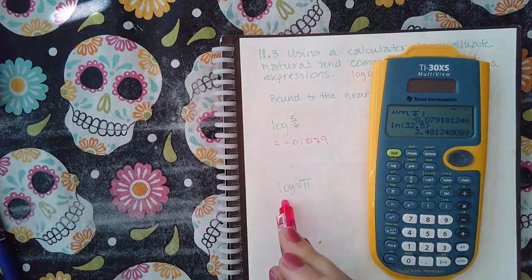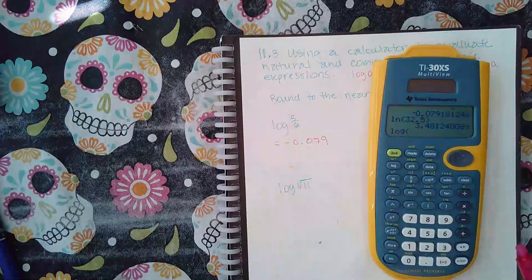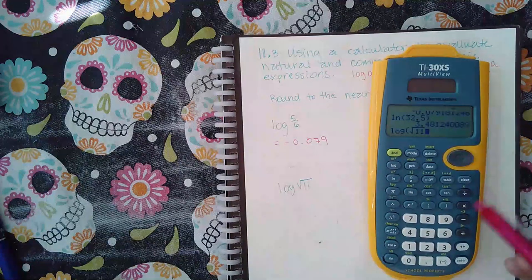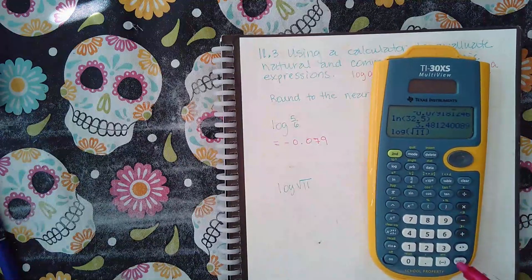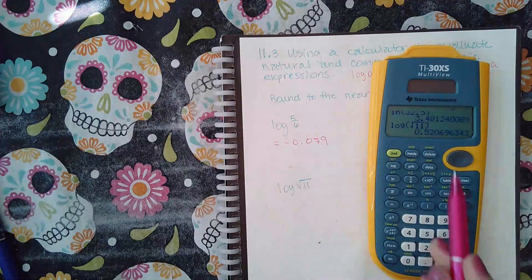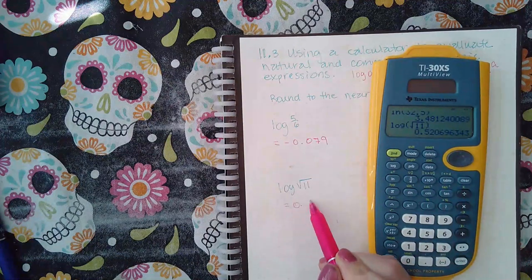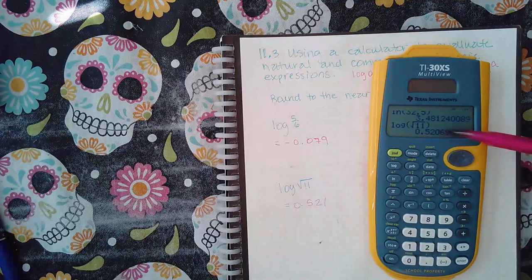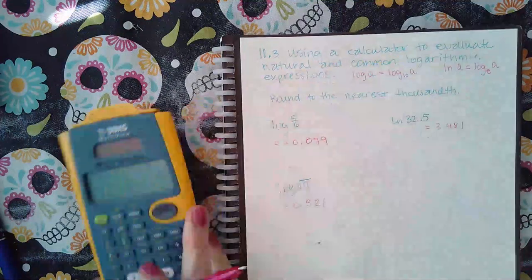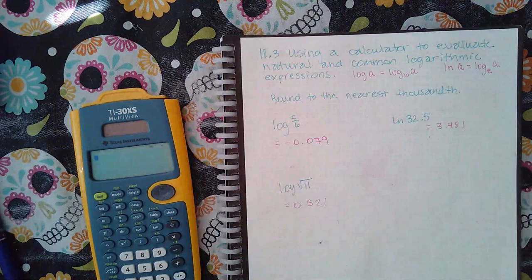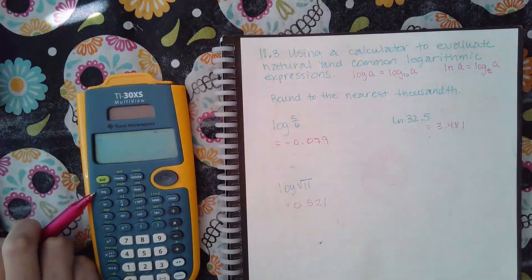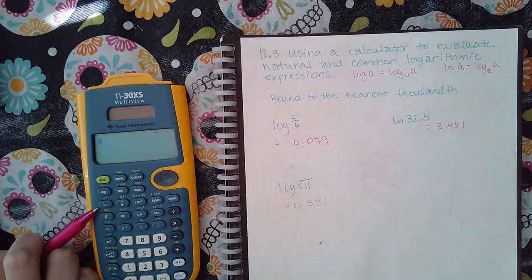Now for the last one, this is the log button. Type in the square root of 11, close my parentheses. That one is 0.521 because the 6 will affect the zero. But that's pretty much it. All you're doing is typing them in the calculator, using the appropriate buttons: log for the common log and ln for the natural log.